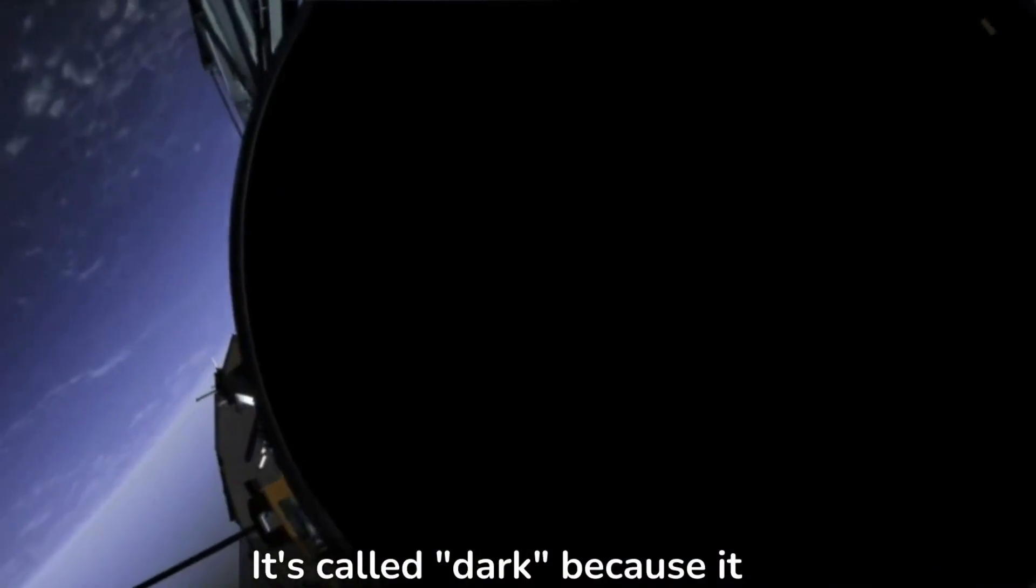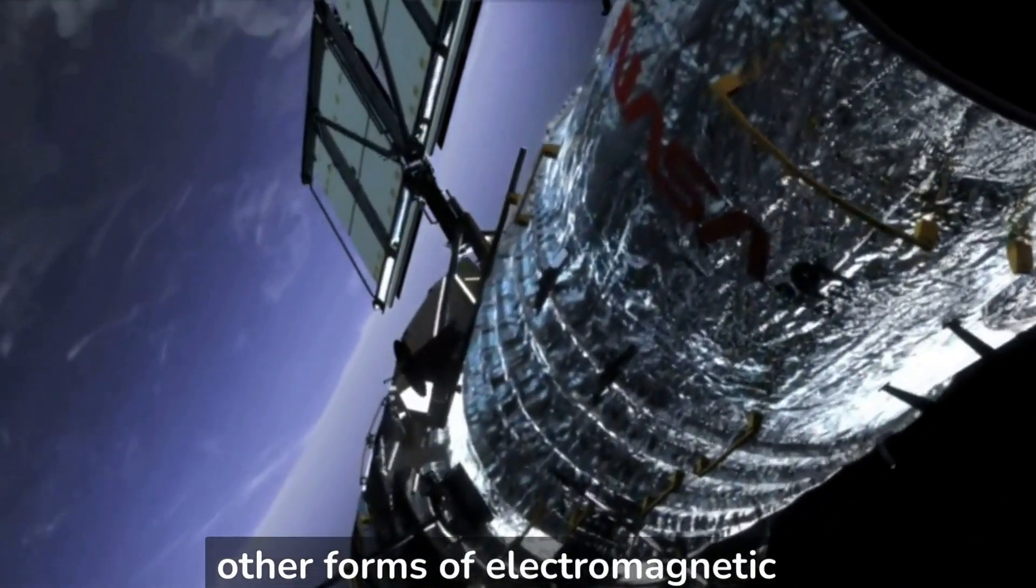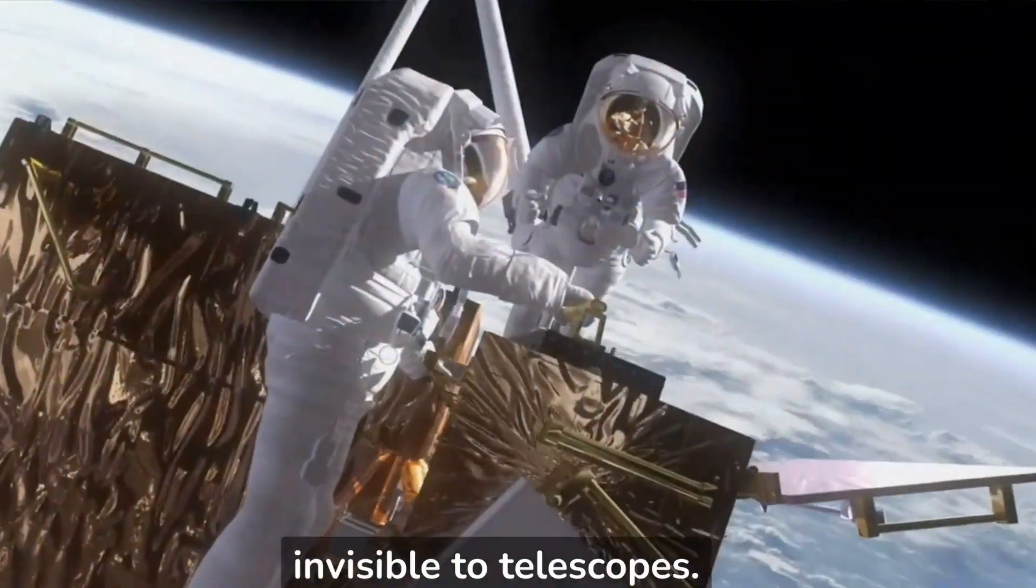It's called dark because it doesn't interact with light or other forms of electromagnetic radiation, making it invisible to telescopes.